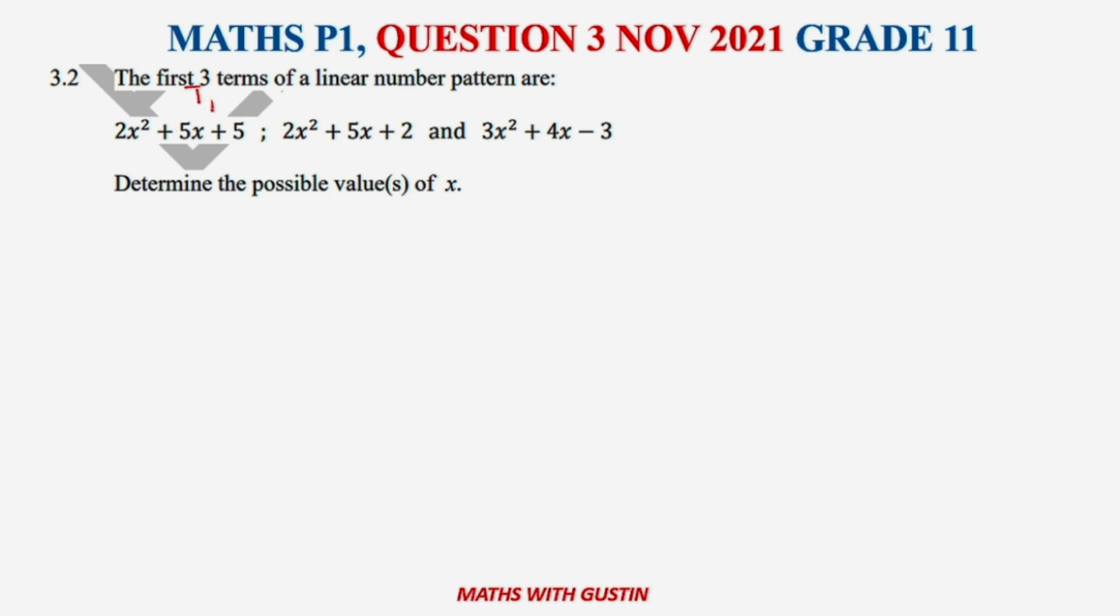You are given T1, T2, and T3. They said the first three terms of a linear number pattern are: 2x²+5x+5, 2x²+5x+2, and 3x²+4x-3. Determine the possible value of x.